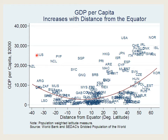Over here in the Southern Hemisphere, we also see that as distance from the equator increases, so does GDP per capita. This is Australia, New Zealand, Argentina — which is not a terribly rich country, but it's much richer than countries closer to the equator. Down here you can't even tell what these countries are because there are so many of them, but that's precisely the point: you see an awful lot of very poor countries close to the equator.